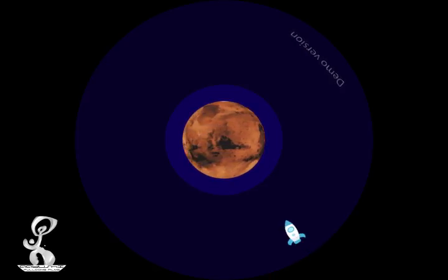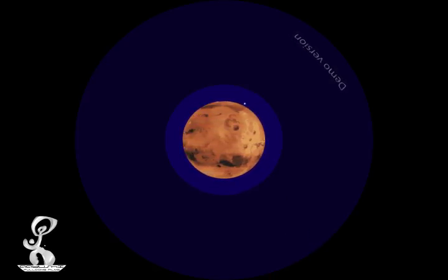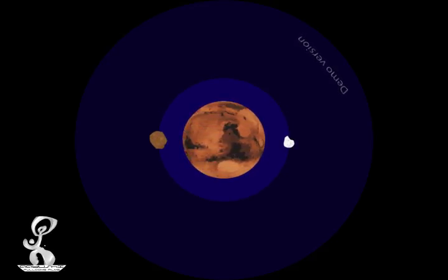Right now, our space scientists are planning to give Mars a visit. Mars has two tiny moons, Phobos and Deimos.